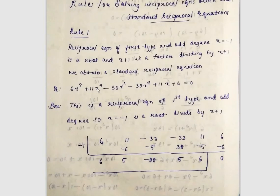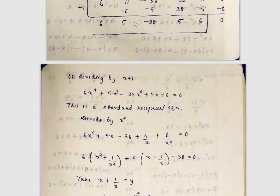For example, the question has coefficients 6, 6, 11, 11, -33, -8 — this is first kind with odd degree. Since x = -1 is a root, (x + 1) is a factor. We divide by (x + 1) and take the resulting coefficients to get a fourth degree equation. The resulting quotient has coefficients 6, 5, 5, -38 (or similar), forming a standard reciprocal equation.